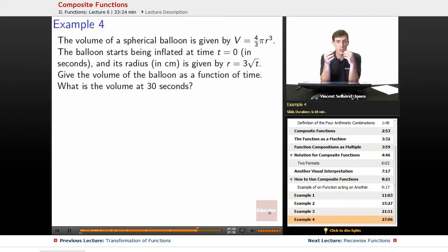At time t equals zero, that's just when we start, its radius is given by r equals three root t. So at t equals zero, three times square root of zero—oh, so its radius is zero. It starts off completely small, completely uninflated, just a dot at zero.